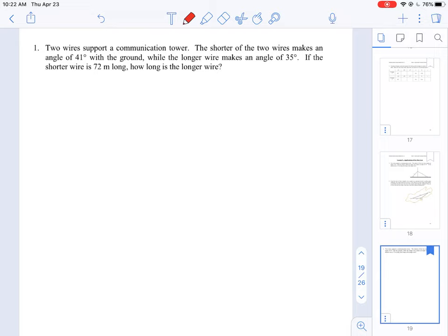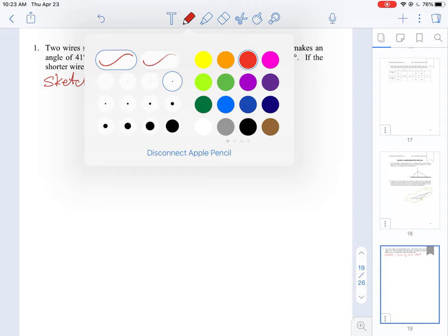The first thing I like to do with a word problem is we need to draw an image or a picture of what we're looking at. So I always look at doing a sketch where we do a drawing and label.